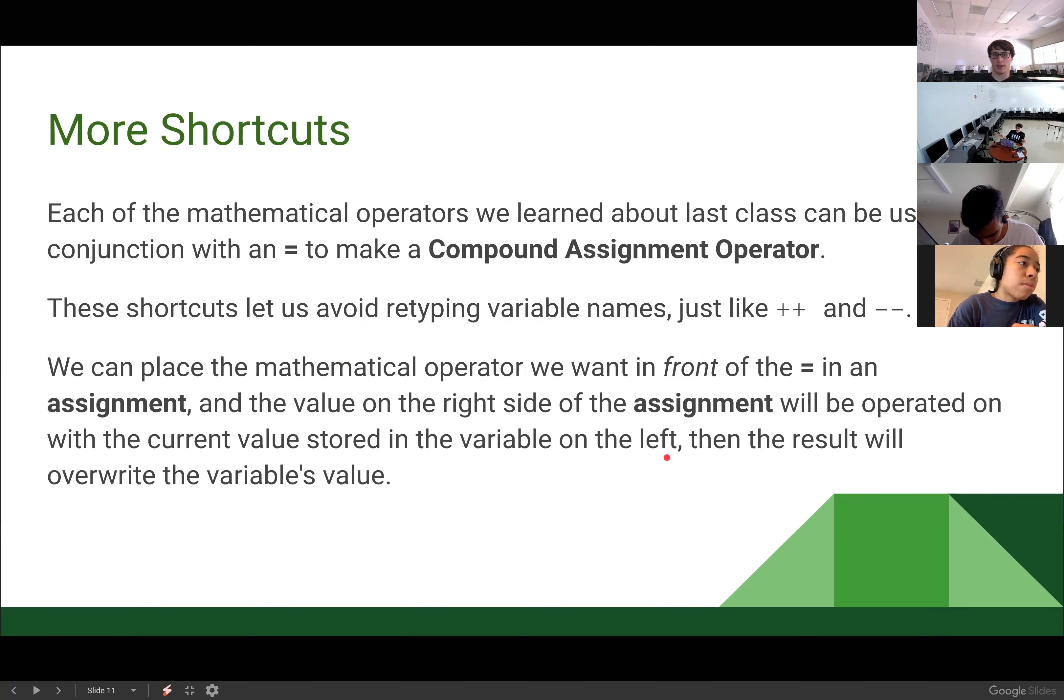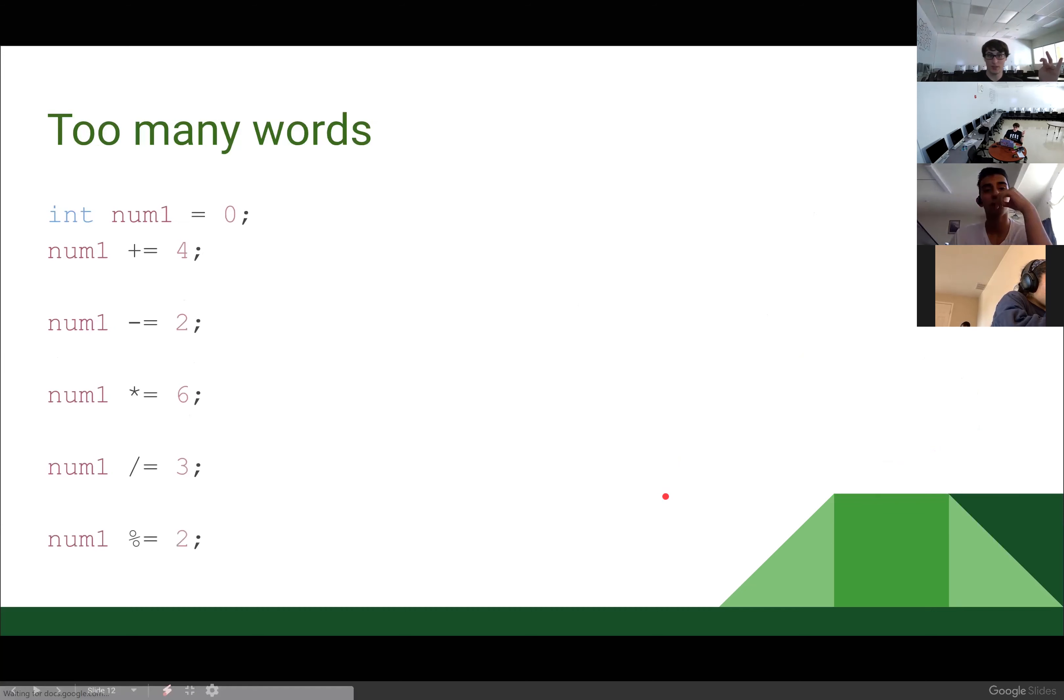All right, back to shortcuts. So each of the mathematical operators we learned about last class can be used in combination with an equal sign to make a compound assignment operator. So these will create a shortcut that let us avoid retyping variable names, just like plus plus and minus minus did. So what we're going to do is we're going to place the mathematical operator that we want to do in front of the equal sign when we're doing an assignment. And then the value on the right side of the assignment will be operated on with that operator. And the other value will be the current value stored in the variable on the left. And then the result of that operation will overwrite the variable's value. That's a lot of words, so let's look at an example.